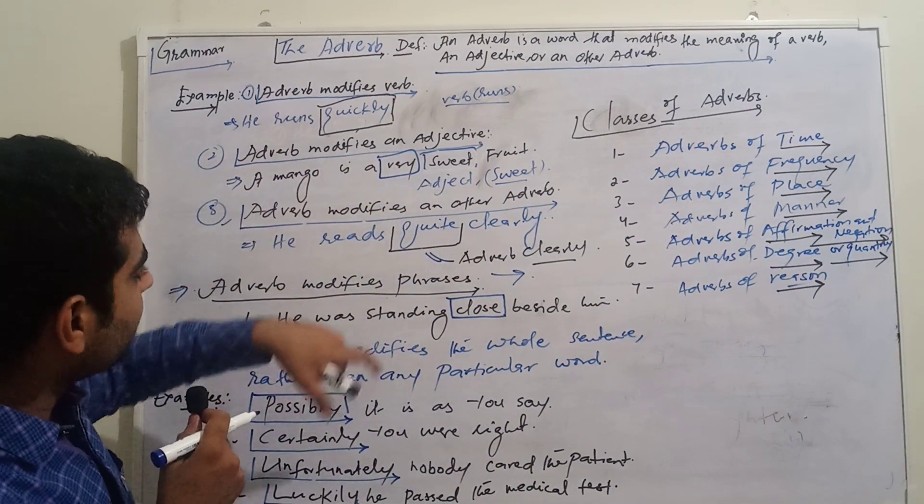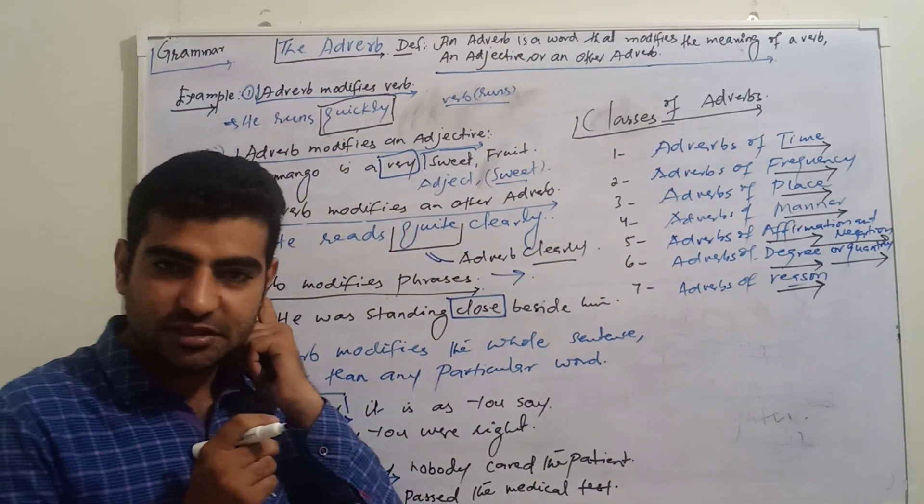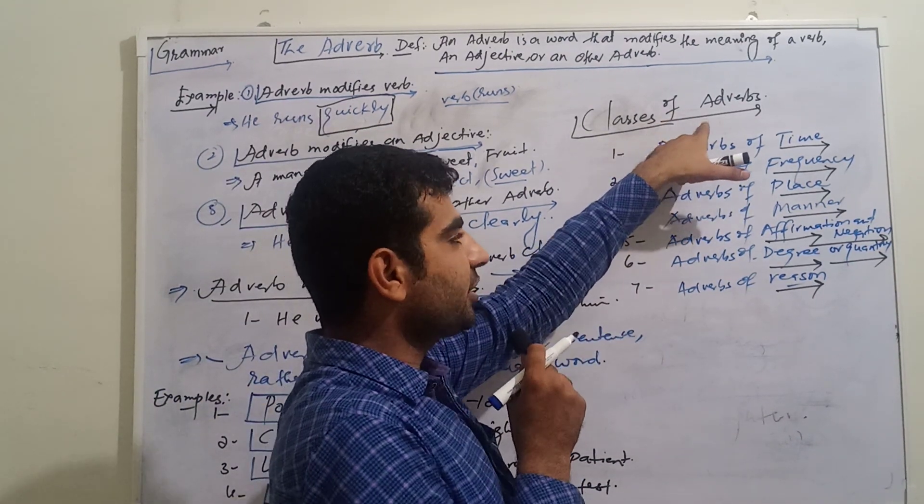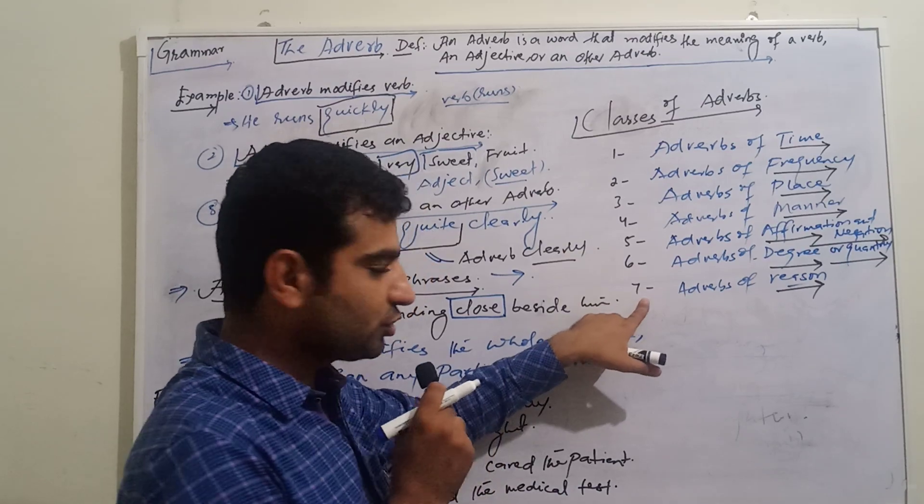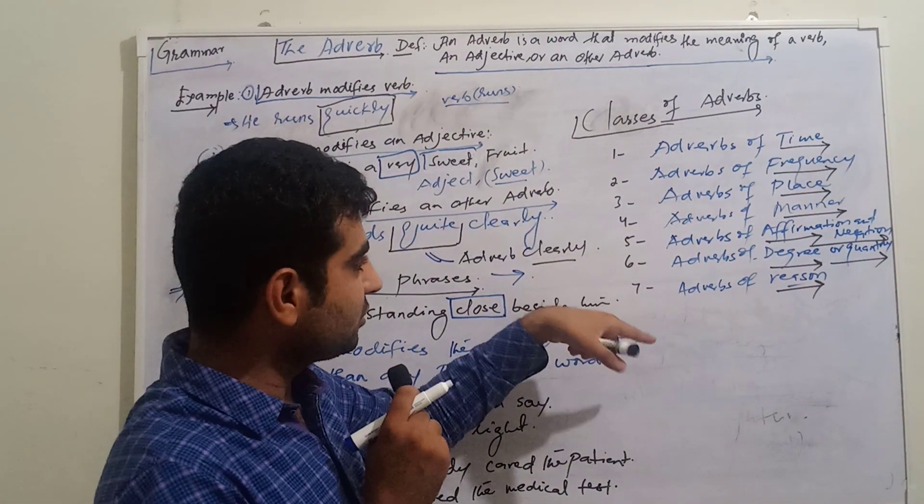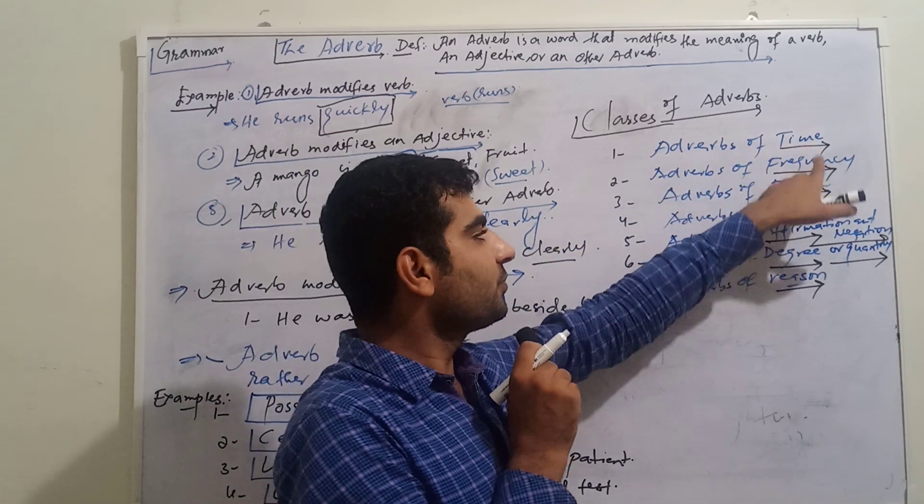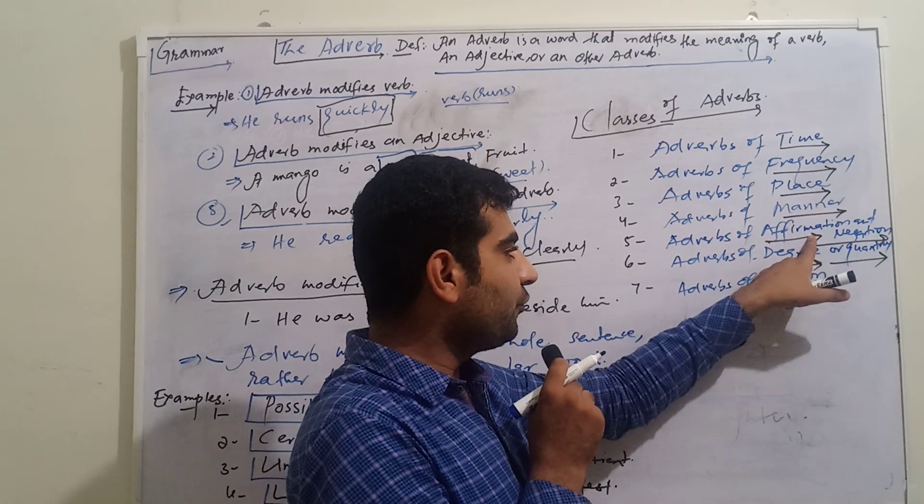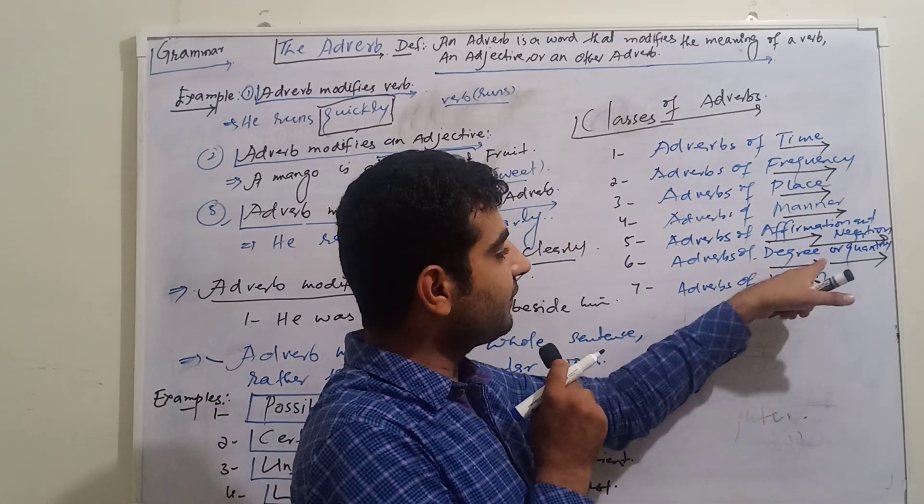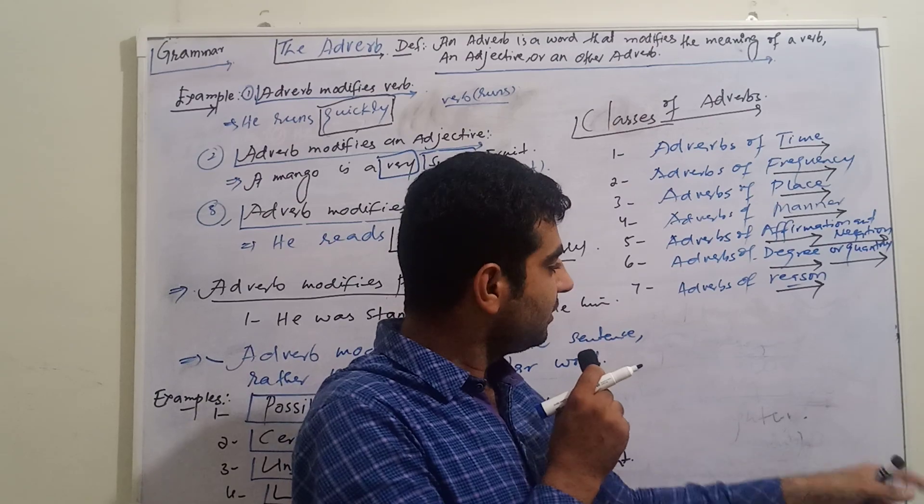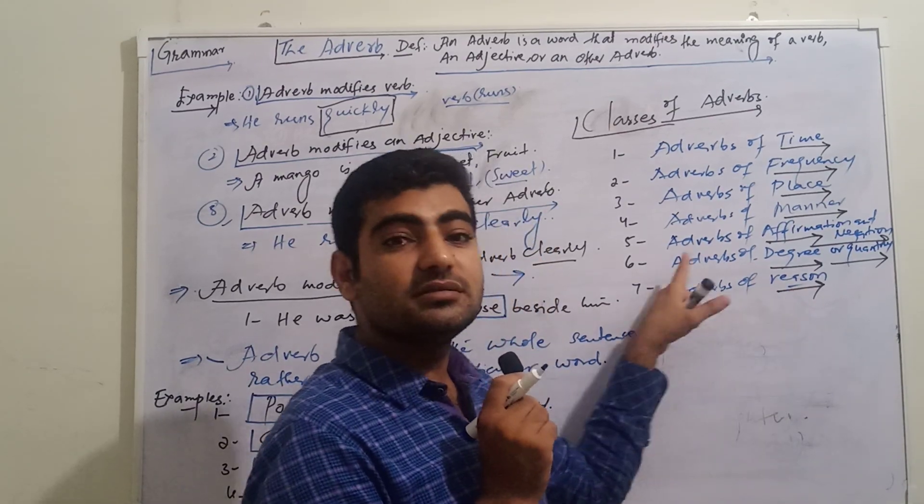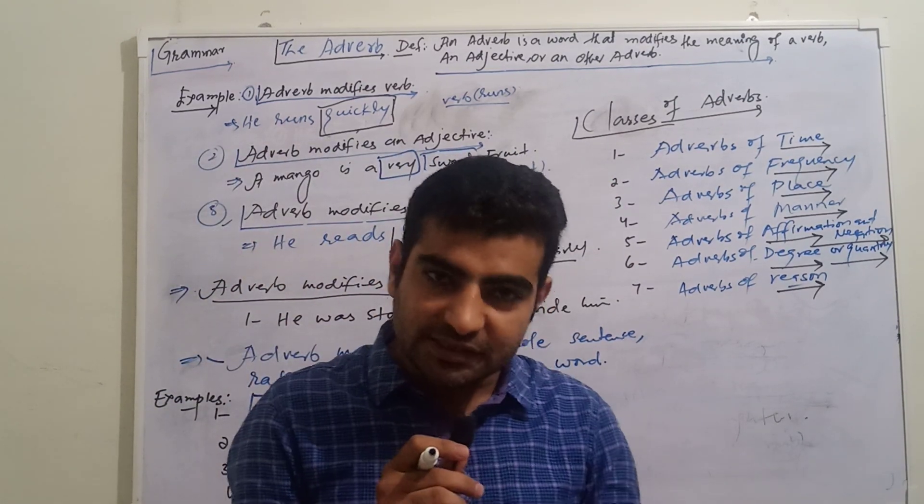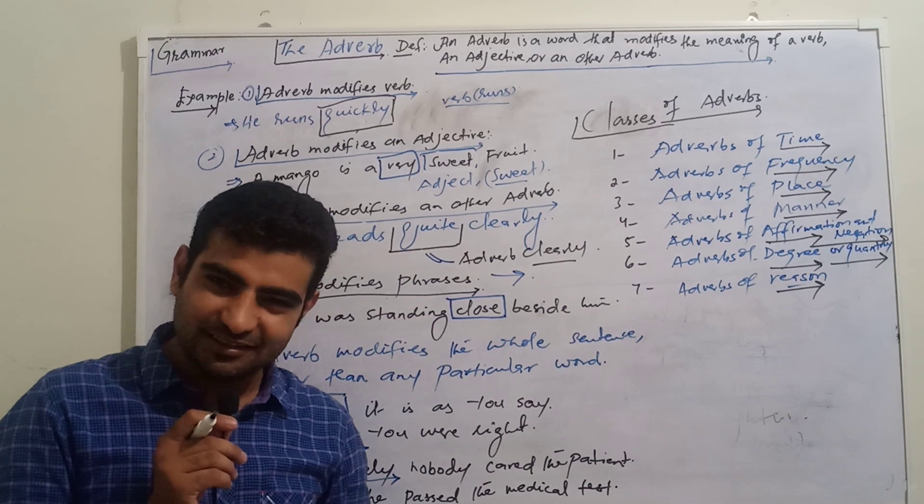This is the way we can understand adverbs. I hope you can understand things very clearly. Classes of adverbs: there are seven most important classes of adverbs - adverbs of time, frequency, place, manner, affirmation and negation, degree or quantity, and reason. These are the kinds of adverbs. We will discuss them one by one. Thank you so much and chill out.